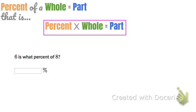Here it says 6 is what percent of 8? First, I pick out the percent. We don't know the percent in this case, so let's call it p. Remember, percent of a whole equals the part. I see the word of, so that means 8 is the whole. So 6 must be the part.